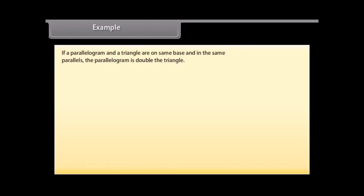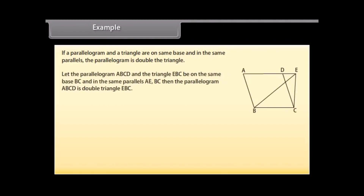Example: Let's prove an example now. If a parallelogram and a triangle are on the same base and between the same parallels, the parallelogram is double the triangle. Let the parallelogram ABCD and the triangle EBC be on the same base BC and between the same parallels AE and BC. Then the parallelogram ABCD is double the triangle EBC.